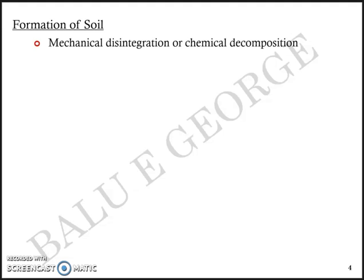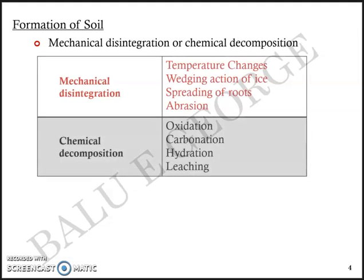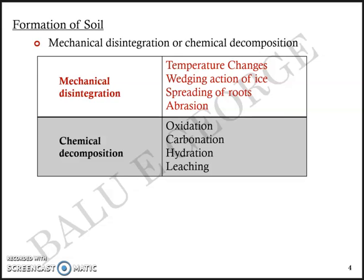The formation of soil can be due to mechanical disintegration or chemical decomposition. Mechanical disintegration may be due to temperature changes, the wedging action of ice, the spreading of roots, or abrasion — the rubbing between particles. In all these cases, there is no significant chemical change; the rock particles got disintegrated and reduced in size to form soil, but have not undergone any considerable change in chemical composition.